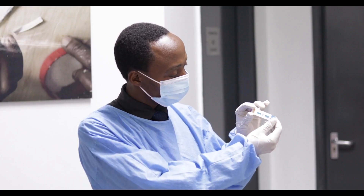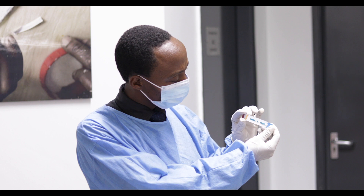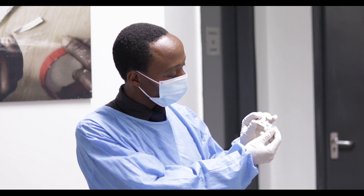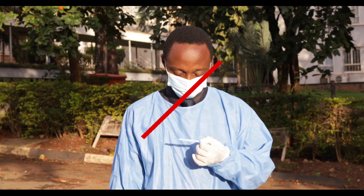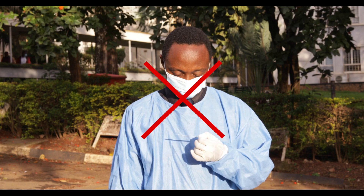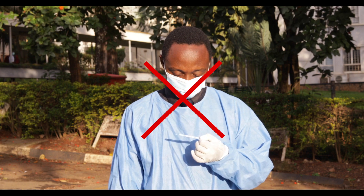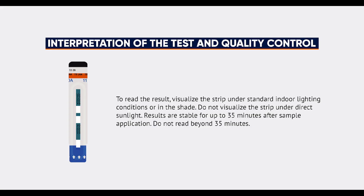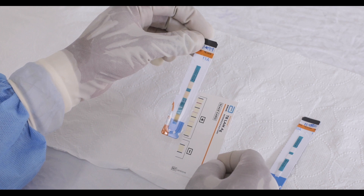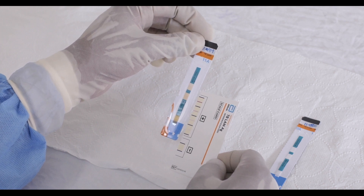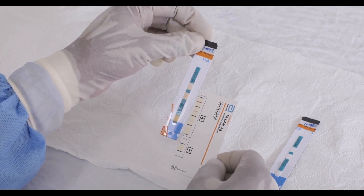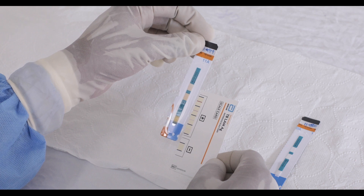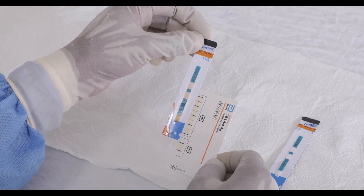To read the result, visualize the strip under standard indoor lighting conditions or in the shade. Do not visualize the strip under direct sunlight. Results are stable for up to 35 minutes after sample application — do not read beyond 35 minutes. Use the reference scale card provided in the kit to assist with results reading and interpretation by holding it alongside the patient window.